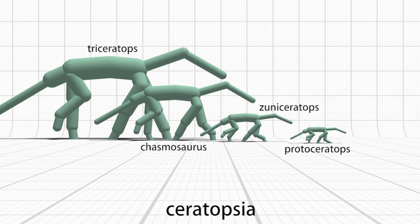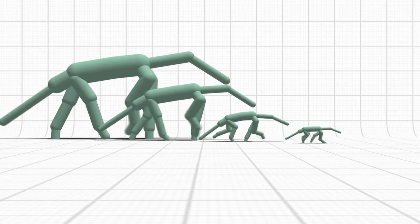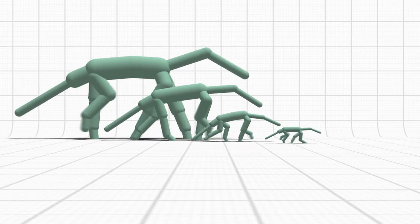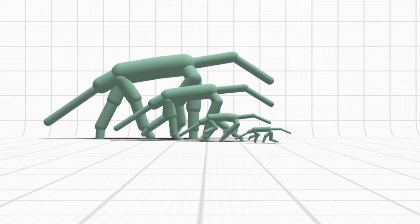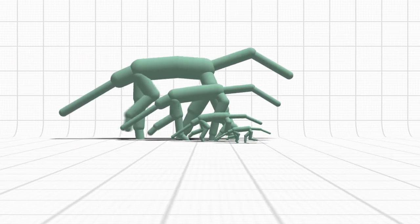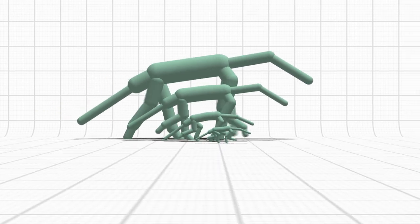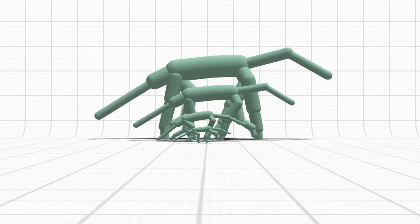We show this same phenomenon on four quadrupedal dinosaurs, each created by scaling the model for a triceratops to match the size of several other dinosaurs. In this example, compare the motion of the triceratops in back to that of the protoceratops in front. These two gaits differ in a way which visually captures the effects of the triceratops' significantly larger mass.